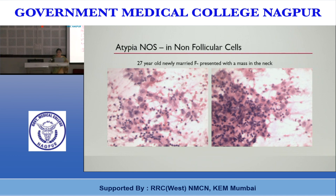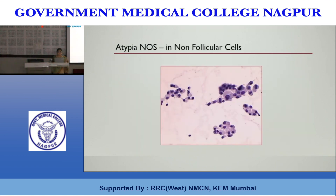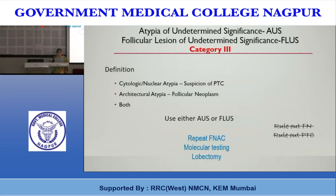The AUS category is very heterogeneous. When you see cells in trabeculae with granular cytoplasm, a parathyroid lesion may come to mind — confirm the radiological location of the nodule and consider serological investigations. Architectural atypia and combined cytologic plus architectural atypia will be discussed further when covering Category 4.